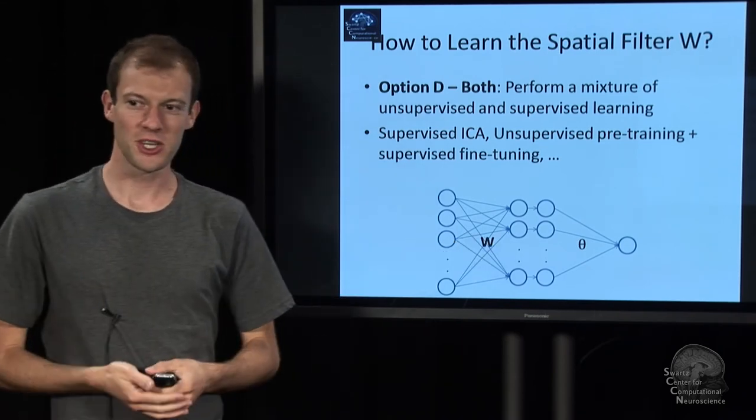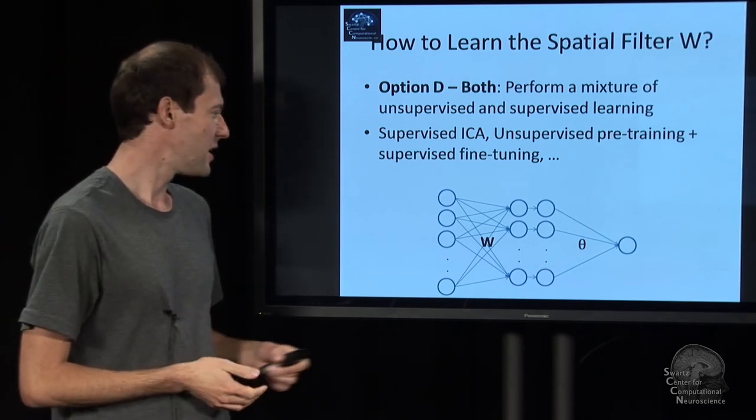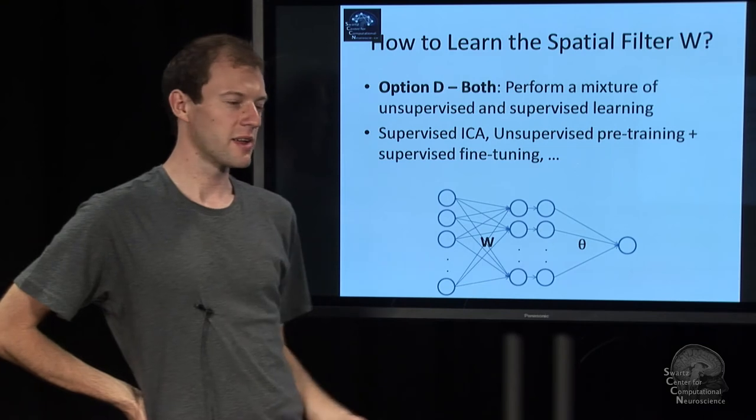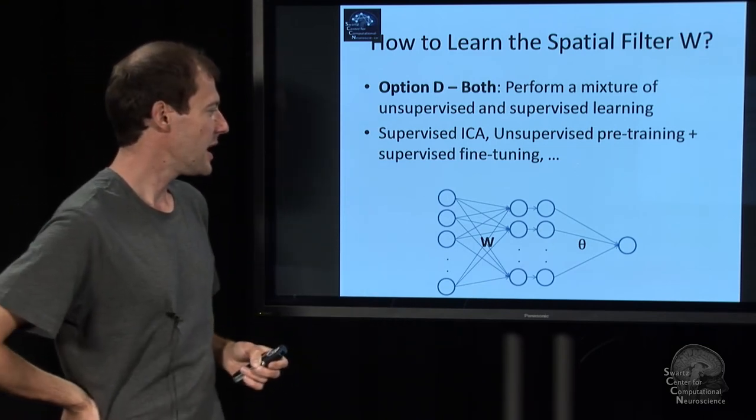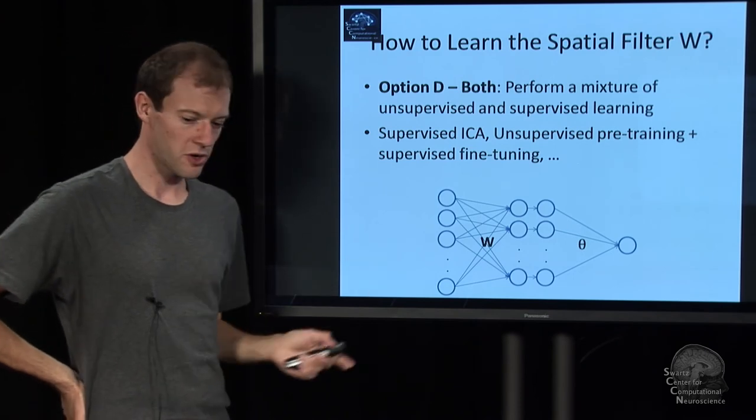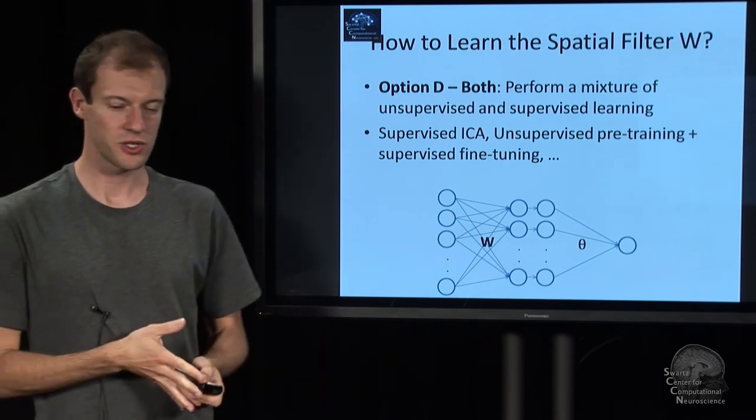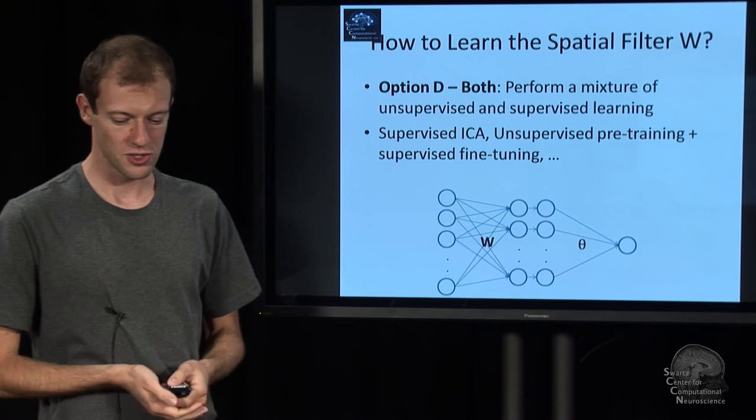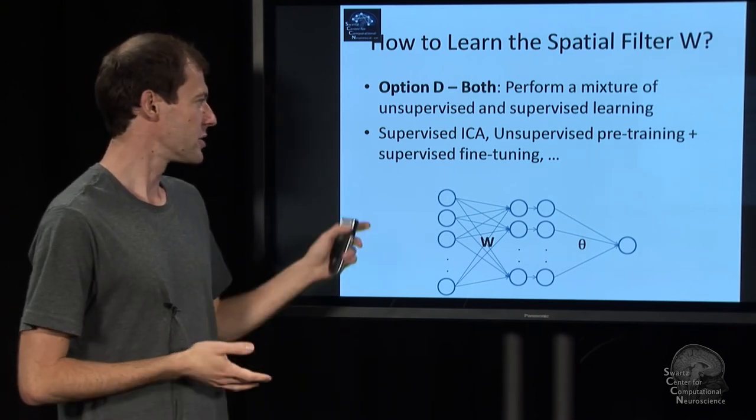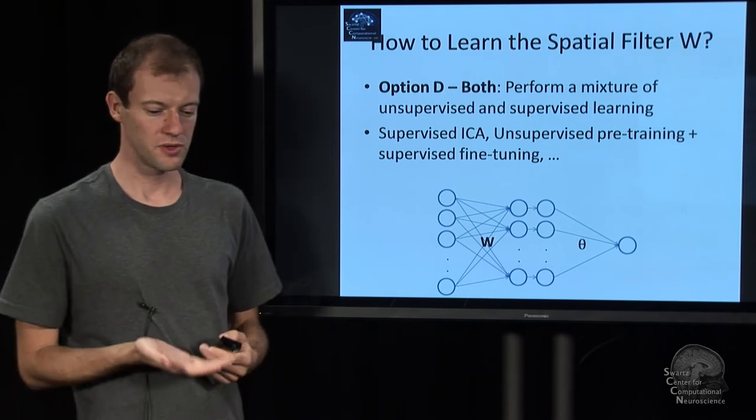And there's actually flavors of ICA that are called supervised ICA, where you can have some information using label information to get these parameters optimized better. So there's stuff like that. But in fact, the restricted Boltzmann machines of Hinton et al. are designed in a similar way. You do unsupervised pre-training, and then fine-tune it using label information.